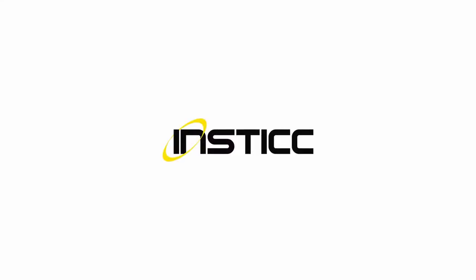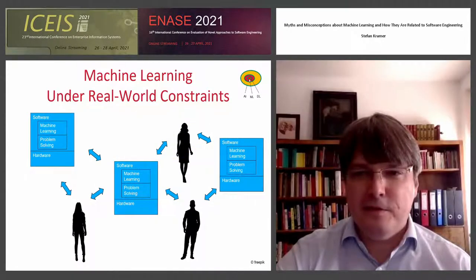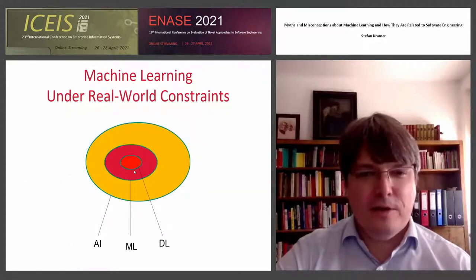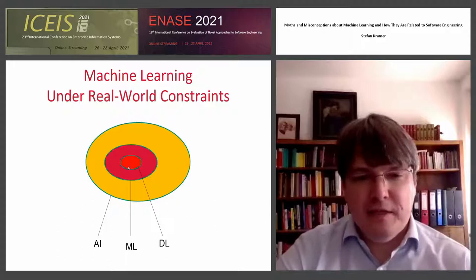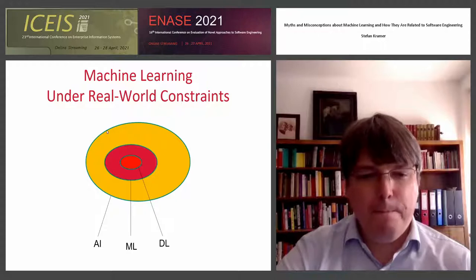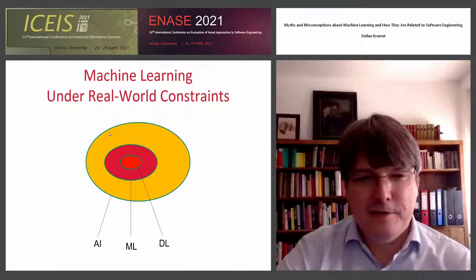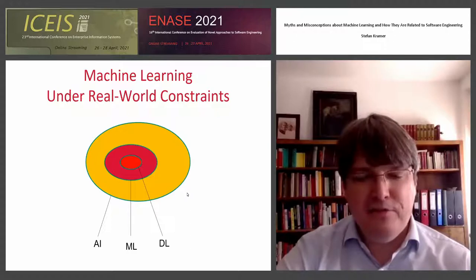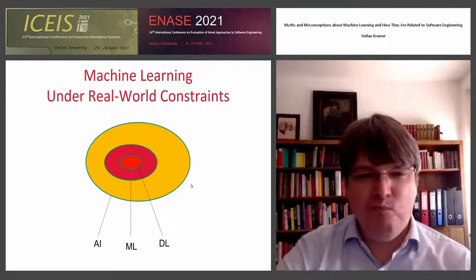Before I start, I'd like to talk about the setting I consider. First, let's talk about terminology. My interpretation of the current state of the art in AI is that deep learning is a part of machine learning, and machine learning in turn is a part of AI. This is quite frequently confused. Think of it as a Venn diagram — they are definitely not one and the same.